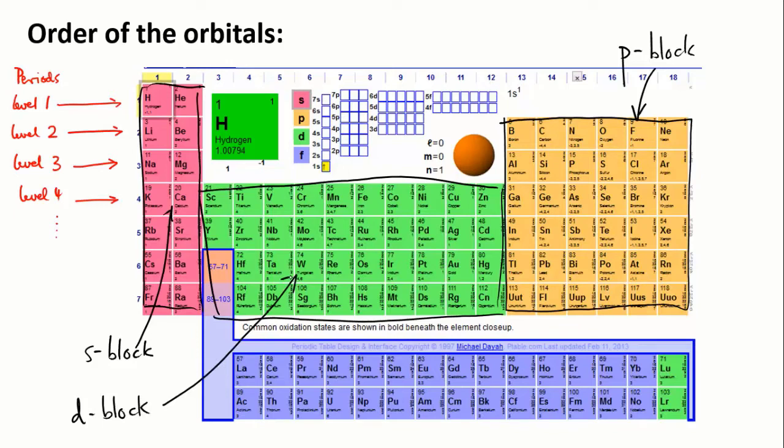So, if you read through the periodic table in order of atomic number, it will show you the order of the orbitals. Starting at hydrogen and helium, and helium has been put in this slightly odd place to show that it is part of the s-block. So, starting with hydrogen and helium...